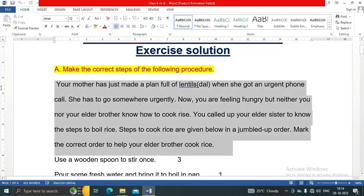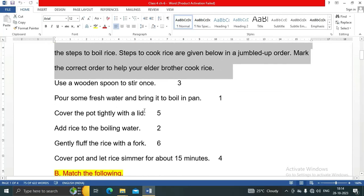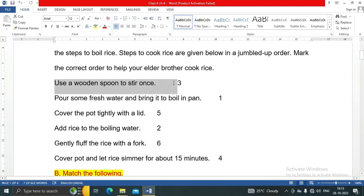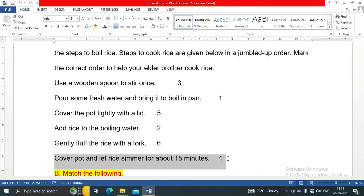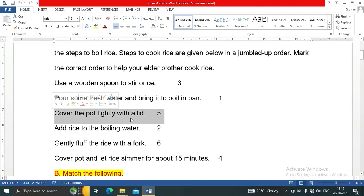Here is the answer. First step should be: pour some fresh water and bring it to boil in pan. Second, add rice to the boiling water. Third, use a wooden spoon to stir once. Number four, cover pot and let rice simmer for about 15 minutes. Second last stage, cover the pot tightly with a lid. And last, gently fluff the rice with a fork. So these are the steps, right?